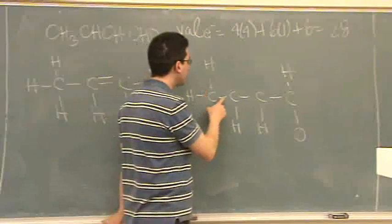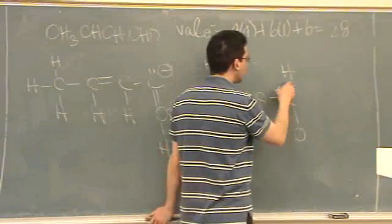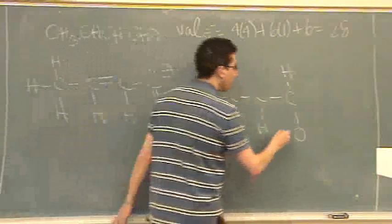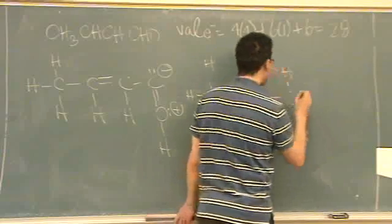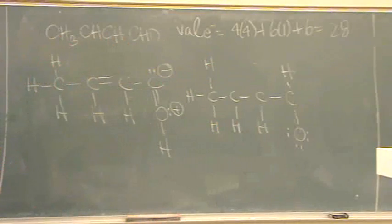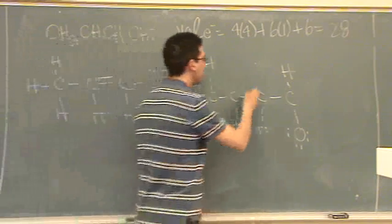All right. So here, I did 2, 4, 6, 8, 10, 12, 14, 16, 18, 20. So 20, 22, 24, 26. Where do you want to put the last pair? On one of the center carbons. Which carbon do you want? Either one. It doesn't matter. Okay. Done. Good.